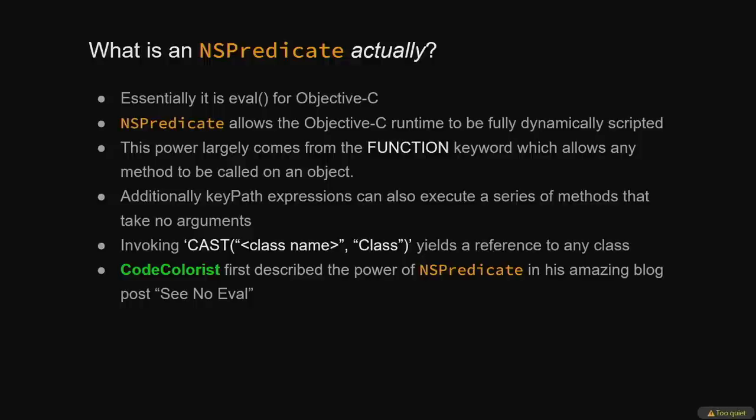While at first glance NSPredicates don't look very interesting, they're actually a powerful scripting language. As CodeColor said in his blog post CNOEVAL, NSPredicates are essentially the eval function for Objective-C. This scripting capability comes largely from the function keyword, which allows any method to be called on any object with any number of arbitrary arguments. CodeColor also discovered that the cast keyword could be used with the class as the second argument to get a reference to any class, essentially functioning like NSClassFromString.